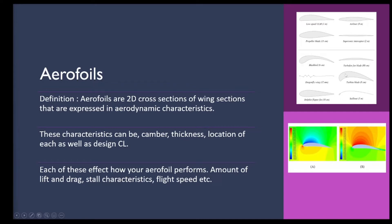Thickness is how tall the aerofoil is from top to bottom. The location of both the camber and thickness is another key characteristic — maximum thickness is here and maximum camber is where it's most curved. There's also the design coefficient of lift, mostly for five-digit aerofoils. Each of these affects how your airfoil performs, including pressure distribution, lift, drag, stall behavior, and the flight speed you're designing for.